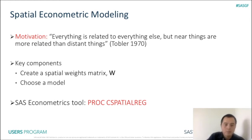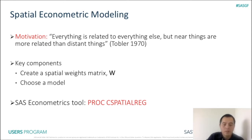In spatial econometric modeling, the spatial weights matrix — often known as the W matrix — plays an important role because it describes the proximity of two units in space. Our choice of models also plays an important role because we need to address various forms of spatial dependence in the data. In this demo, we will focus on the PROC SPATIALREG procedure in SAS econometrics, which was developed for spatial econometric modeling.